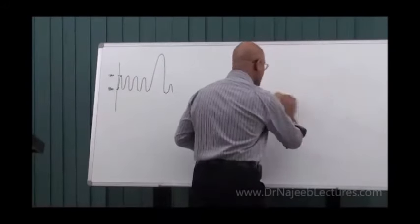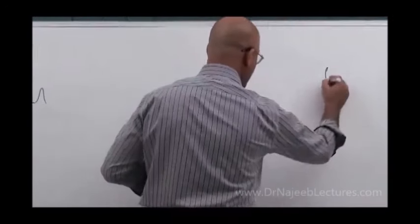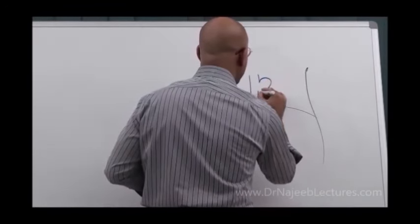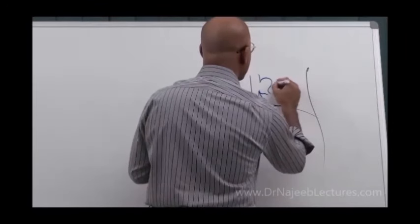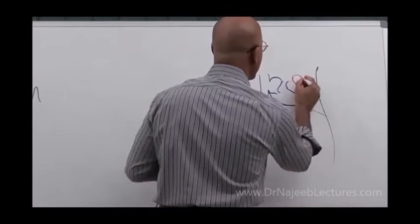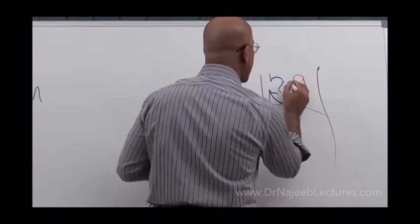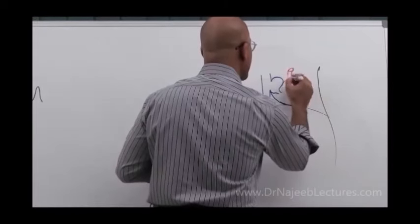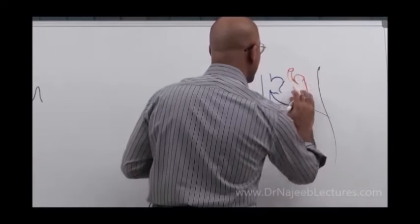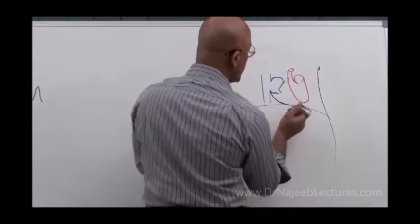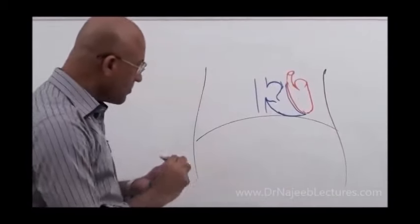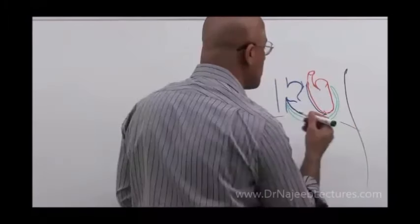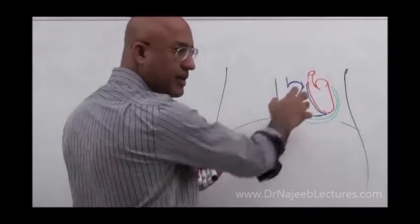Now let me tell you what really happens during the respiratory cycle. This is your chest with the diaphragm. Here lies your right heart and here is your left heart. Normally, the pericardium around it is filled with 30 to 50 ml of fluid and is not interfering with the dynamics of the heart.